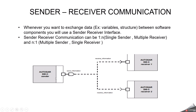The sender just provides the information and the receiver decides automatically when and how to use the information. If you look at this picture, we have a sender software component sending information to multiple receiver software components. The sender software component will have P-Ports, and the receiver software components will have R-Ports.